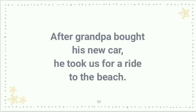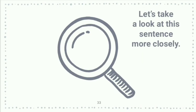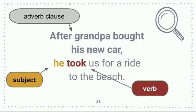After Grandpa bought his new car, he took us for a ride to the beach. Let's take a look at this third sentence more closely. The subject is he. The verb is took. The adverb clause that's modifying and qualifying 'took' is 'after Grandpa bought his new car.' This adverb clause is going to support the verb clause by giving some more information, more detail.